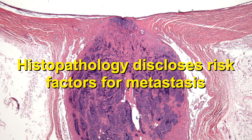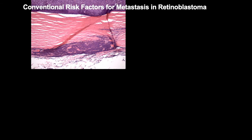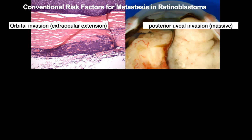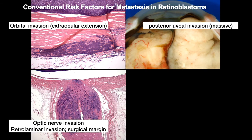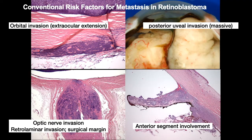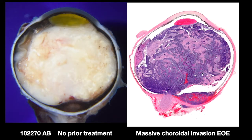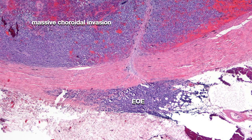Histopathology discloses risk factors for metastasis. Classic conventional risk factors for metastasis in retinoblastoma include extraocular extension or orbital invasion, massive posterior uveal invasion, optic nerve invasion retrolaminar or to the surgical margin, and anterior segment involvement. Here's a relatively recent case seen during the COVID epidemic, which is probably why the tumor was so advanced on presentation. This patient has massive choroidal invasion and extraocular extension.